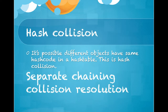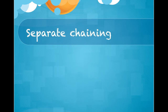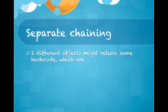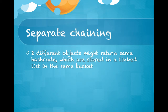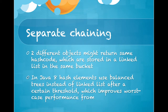What is separate chaining collision resolution? This is a technique that Java uses to resolve hash collisions. Two different objects that return the same hash code are stored in a linked list in the same bucket. In Java 8, hash elements use balanced trees instead of linked lists after certain thresholds, which improves worst-case performance from O(n) to O(log n).